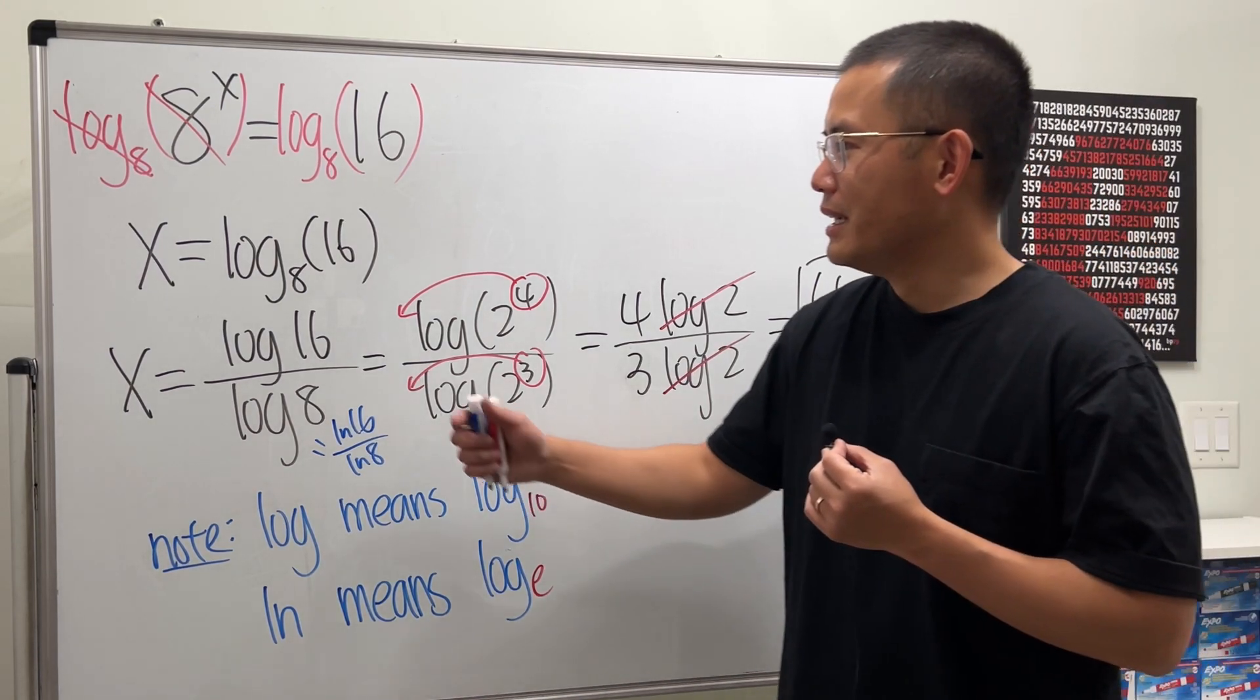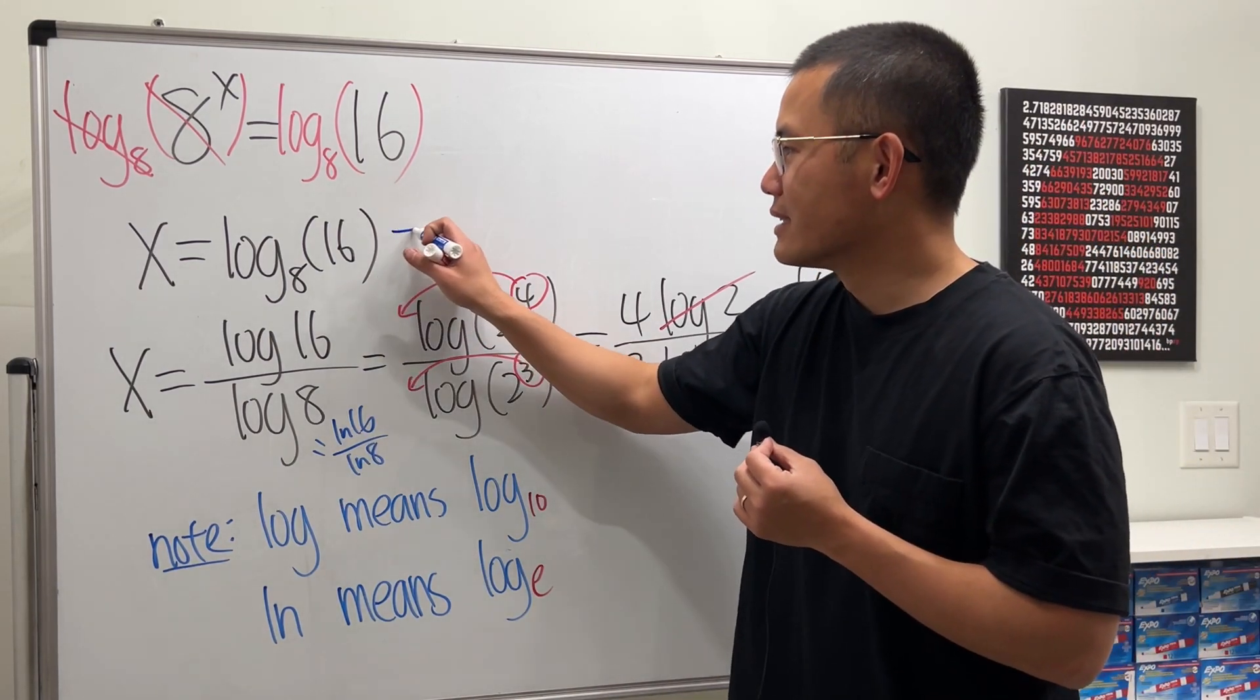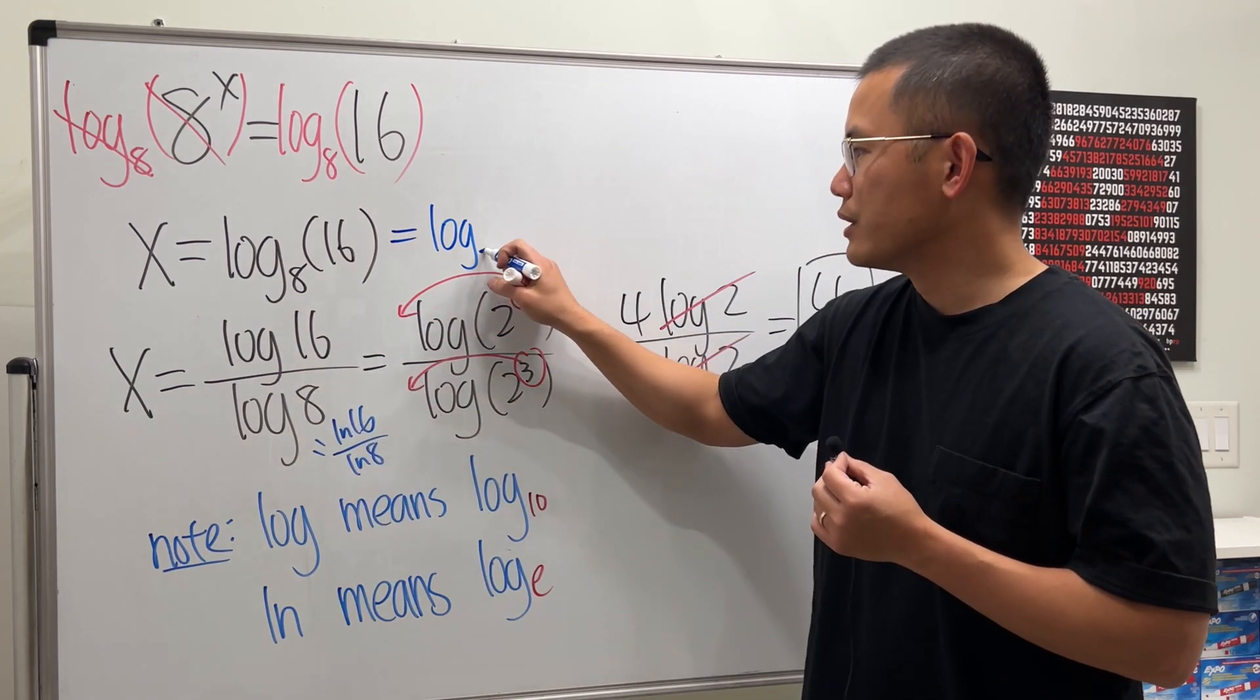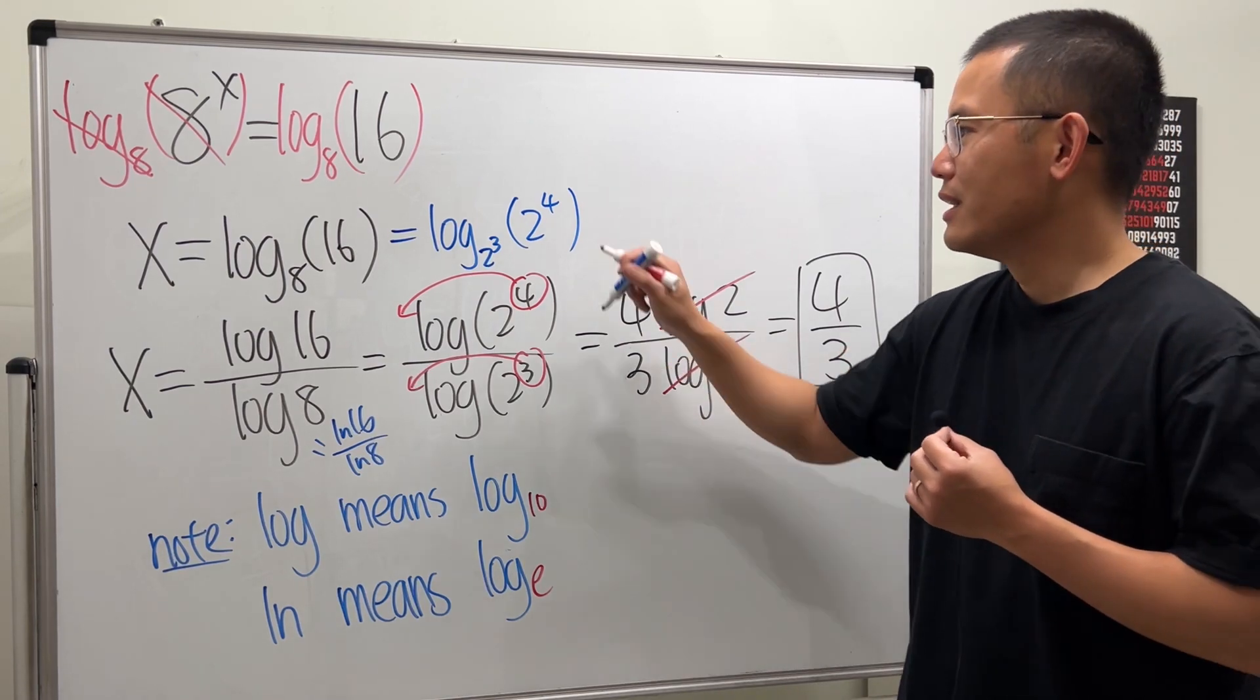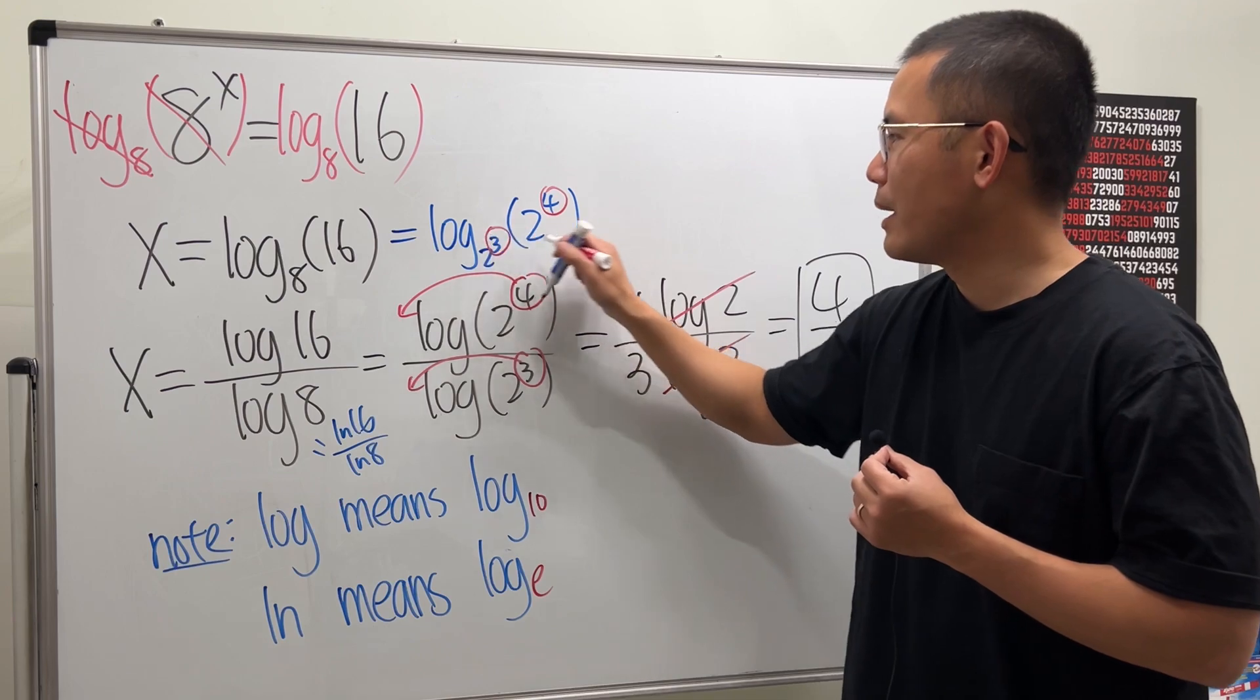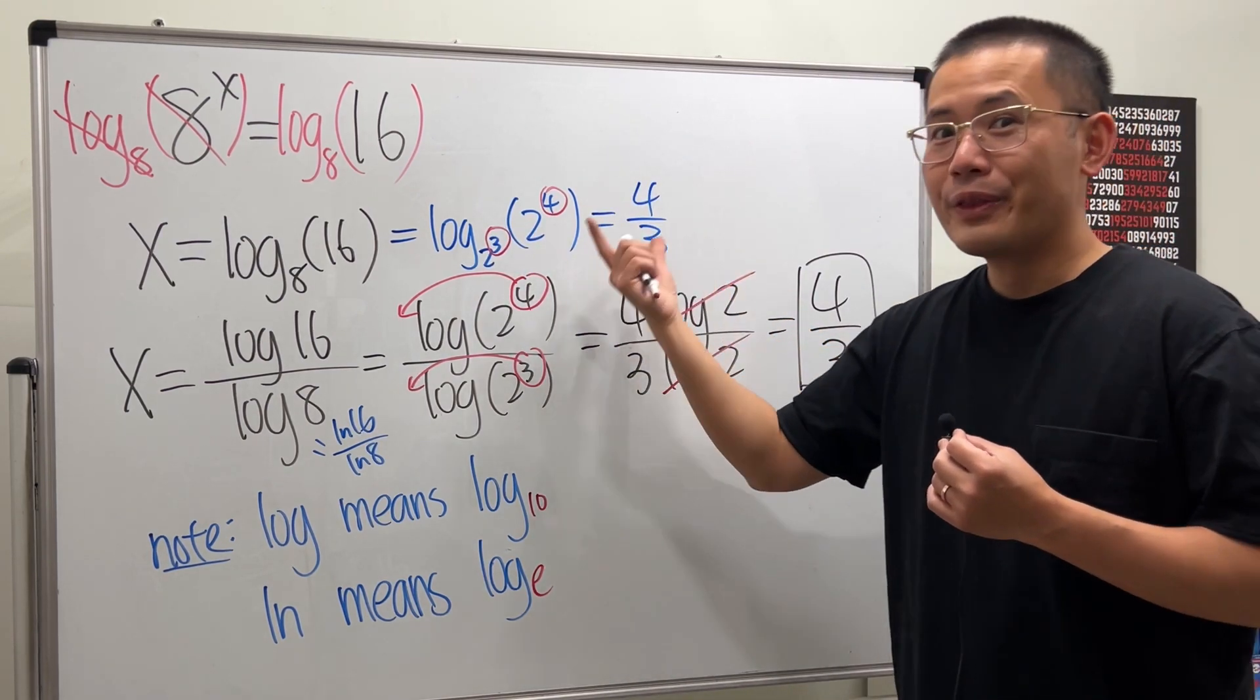Oh yeah, I'll also show you guys a fast way to do this. So if you don't want to go through all that, here is another way. If you look at this, I could also write this down as log. Just change the 8 to 2 to the third power. And then the 16 is 2 to the fourth power. And then the magic is, if the bases are equal, you can just look at this power over that power, and you say the answer is 4 over 3.